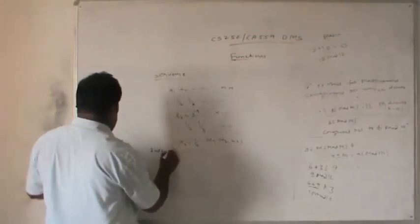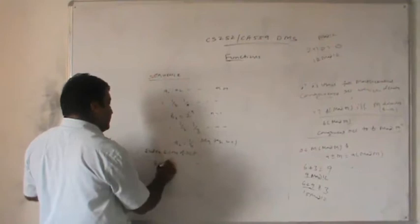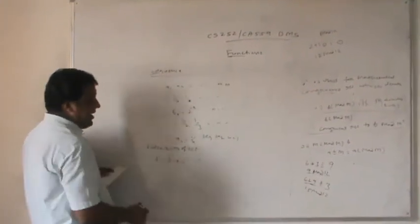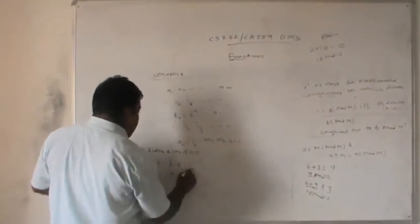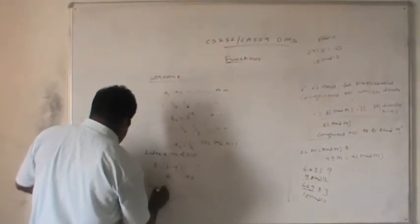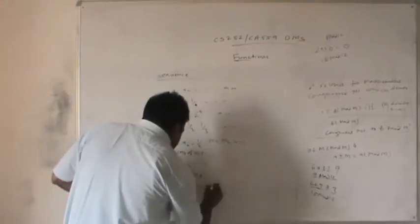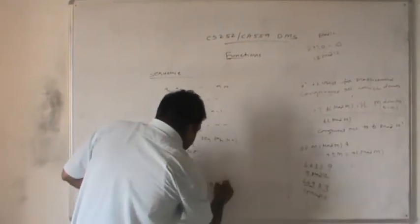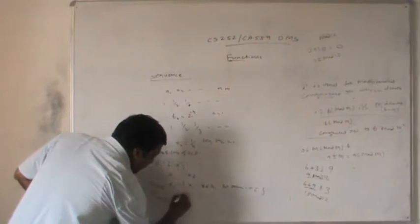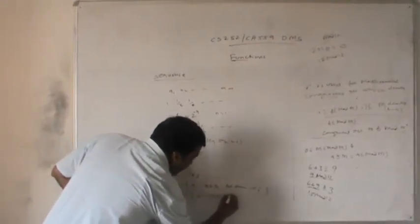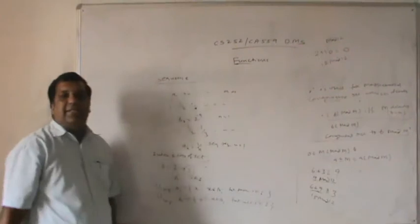The next is the index set or indexed class of sets. We take an index function f such that i maps to s, where i is the index and s is the set. A collection of objects {aᵢ | i ∈ I}, the union ∪(i∈I) aᵢ = {x | x ∈ aᵢ for some i ∈ I}, and the intersection ∩(i∈I) aᵢ = {x | x ∈ aᵢ for all i ∈ I}.